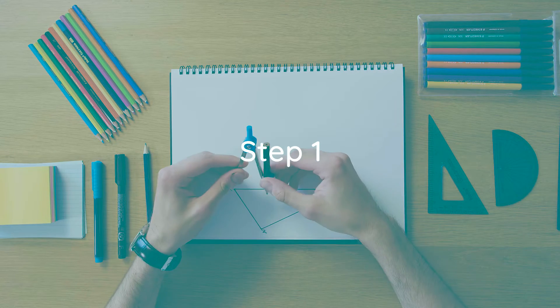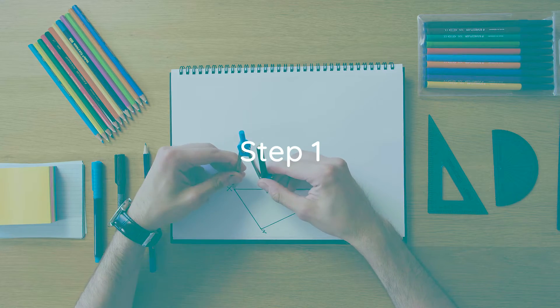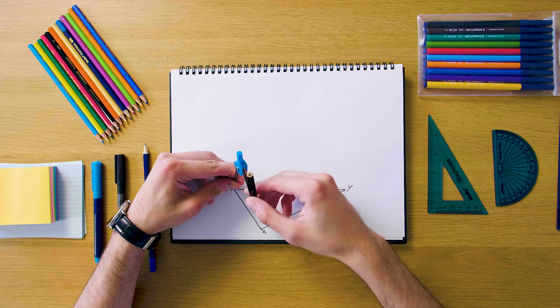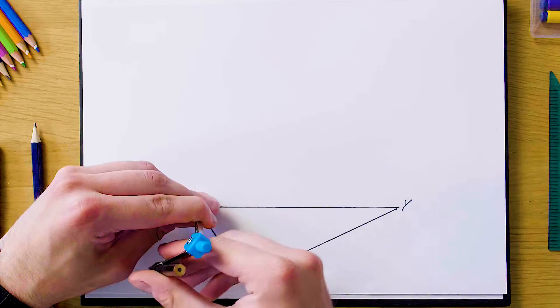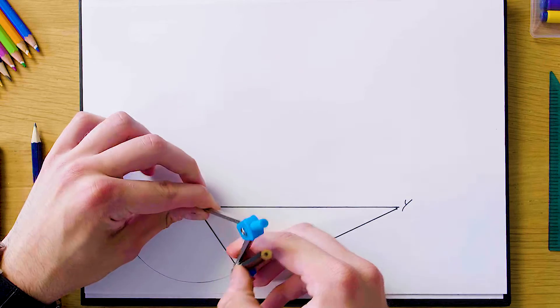So our first step is going to be to grab the compass and bisect any two of the lines. So I'm just going to bisect x, z first. And you can just set your compass length here to anything you like as long as it looks like it's more than half the line. So we're just going to swing two arcs here from both the points x and z.